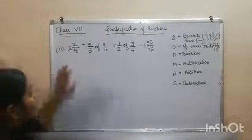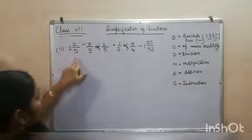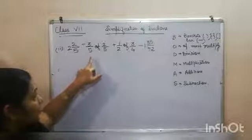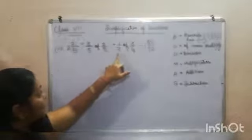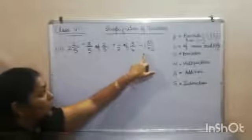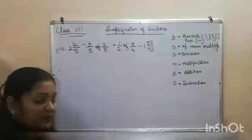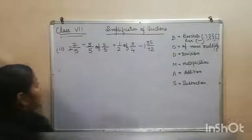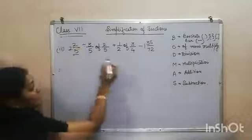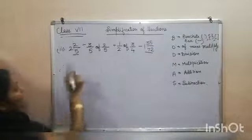In this problem, what we are having? 2 and 2 by 5 divided by 3 by 5 of 2 by 5 plus 1 by 2 of 3 by 4 minus 1 and 35 by 72. So the very first step is to convert mixed fractions into improper fractions.